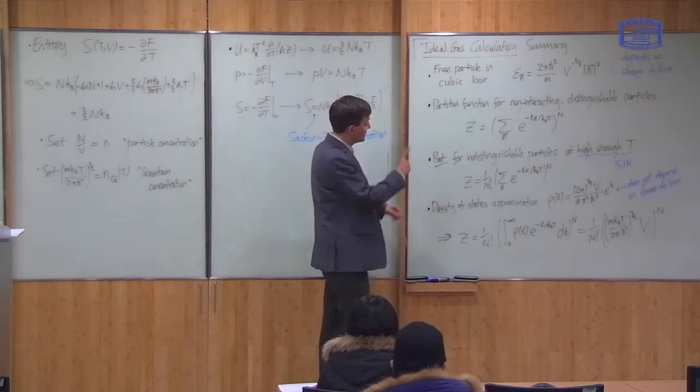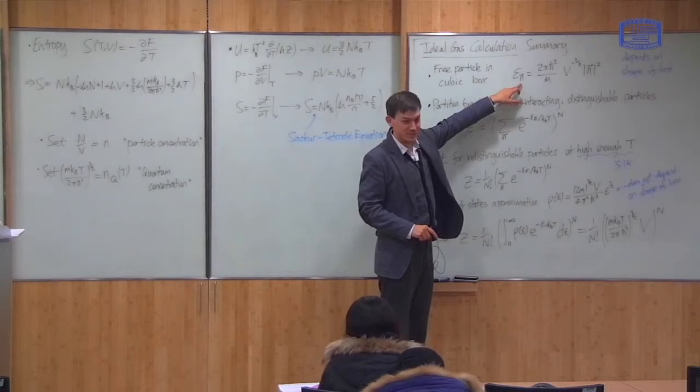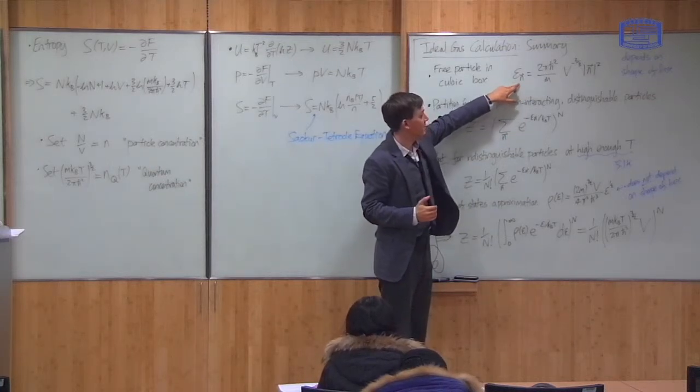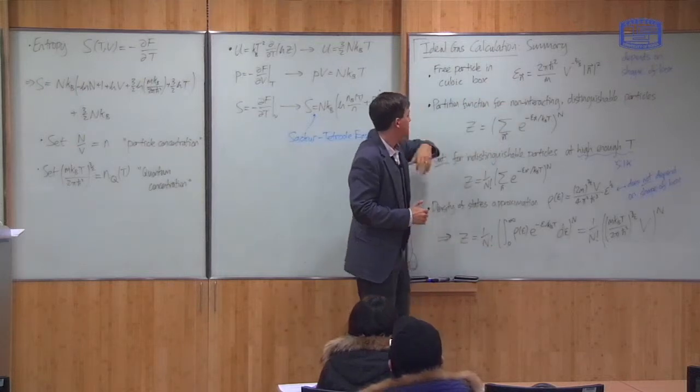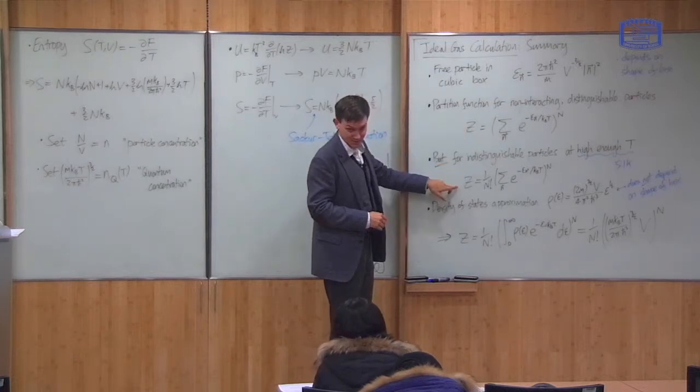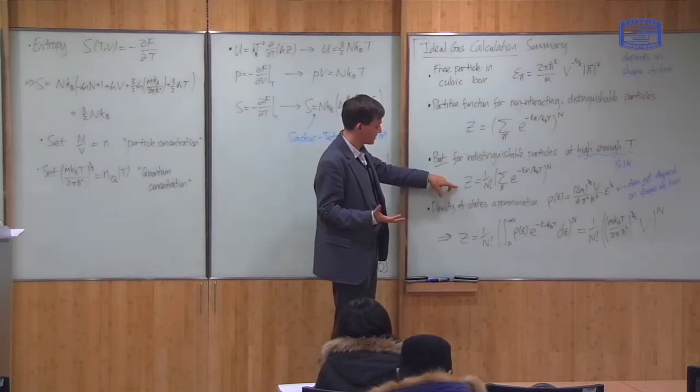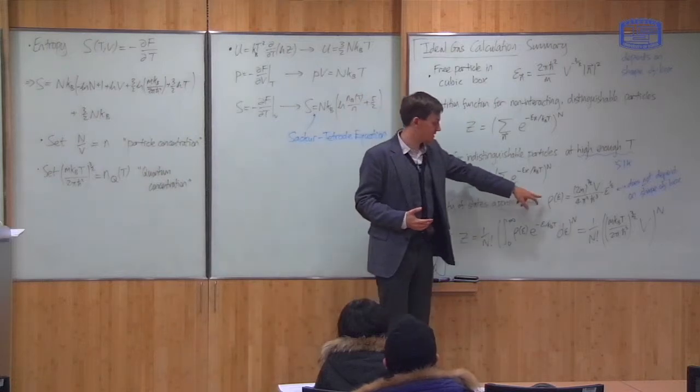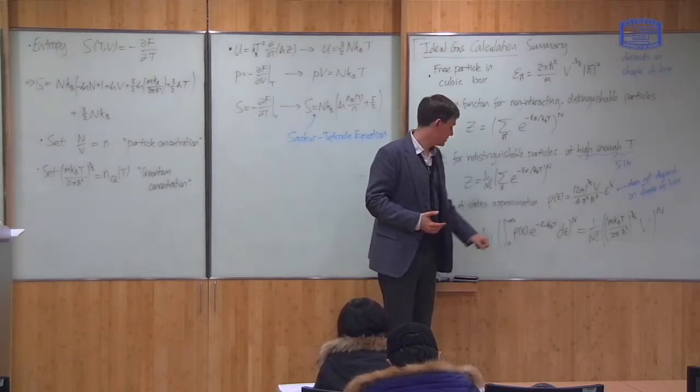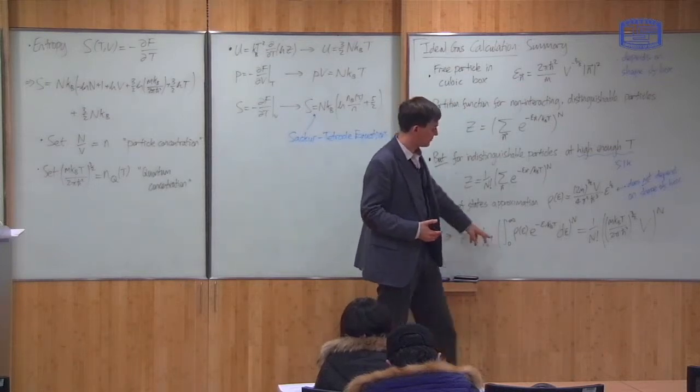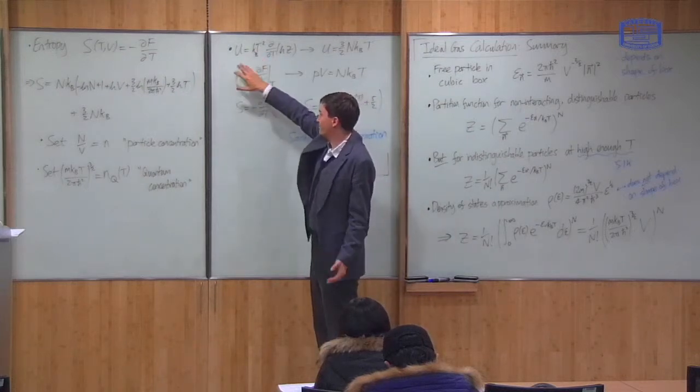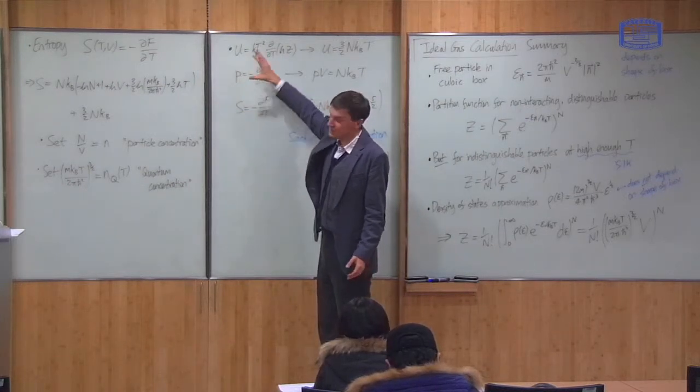The methods are first, find the quantum states. If it's a non-interacting system, find the energy levels of the particles. Then, calculate the partition function like this, using approximations if you need. Then, calculate density of states to replace the sum by an integral which you can do. Using this, find the final form of the partition function. And then, calculate what you want: energy, pressure, entropy, using these equations.